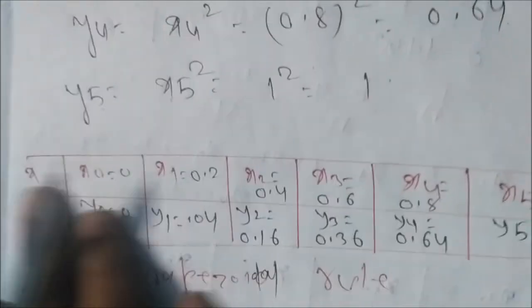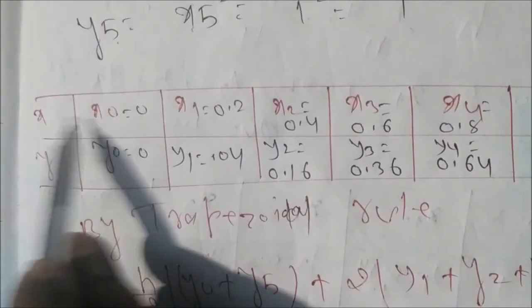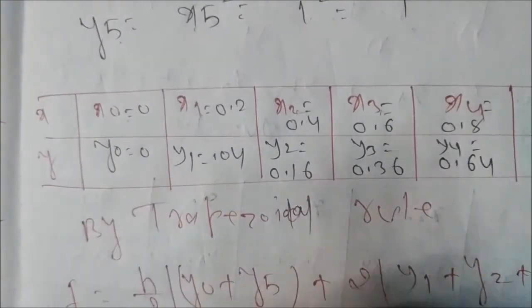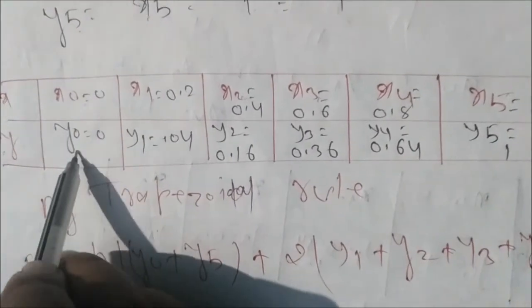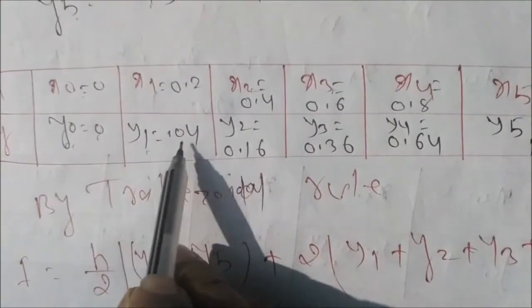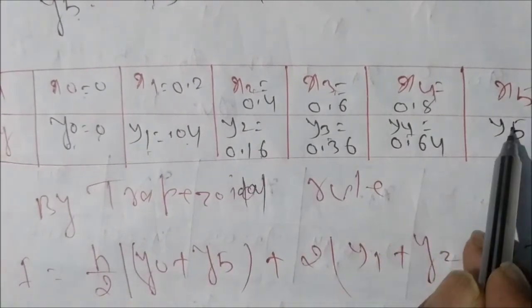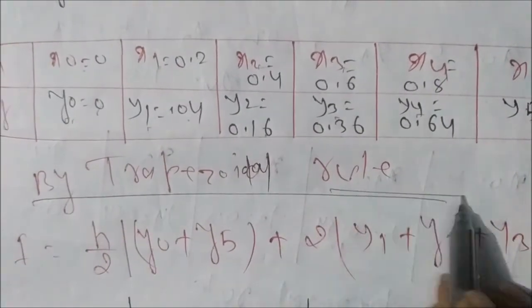Now we construct table: value of x equal to x0, x1, x2, x3, x4, x5. Similarly y according to value of x: y0 equal to 0, y1 is 0.04, y2 is 0.16, y3 is 0.36, y4 is 0.64, y5 is 1. Now by trapezoidal rule.